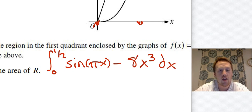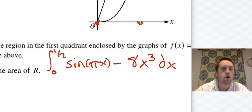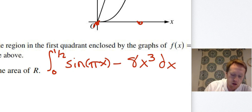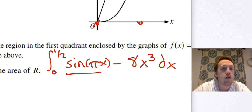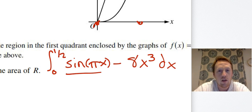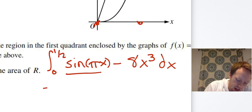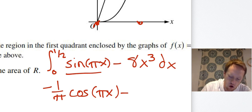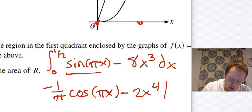Get comfortable with antiderivative shortcuts — it's much easier than doing u-substitution every time. When taking the antiderivative of sin(πx), since the derivative would multiply by π via chain rule, the antiderivative multiplies by 1/π. So the antiderivative is −(1/π)cos(πx) minus 2x⁴, evaluated from 0 to 1/2.